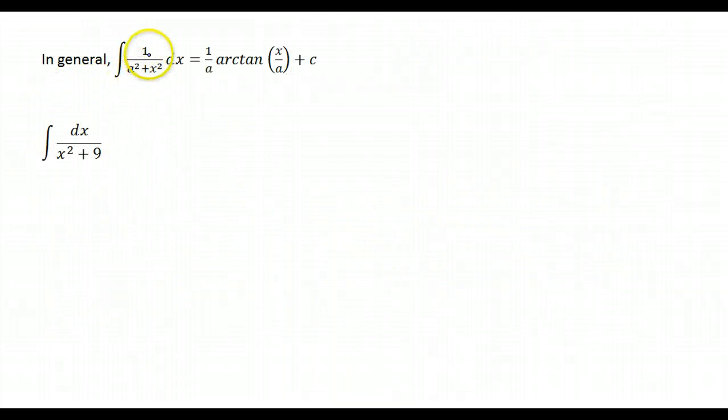So in general, if I have 1 over some number squared plus x squared, that's 1 over that constant, arc tan x over the constant plus c.